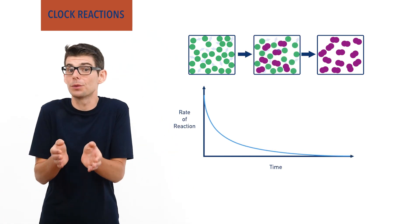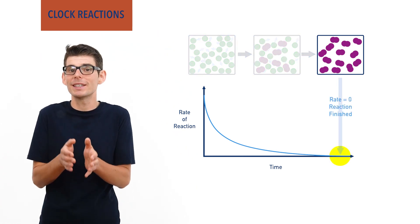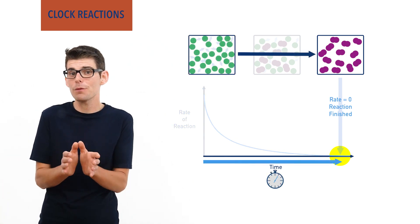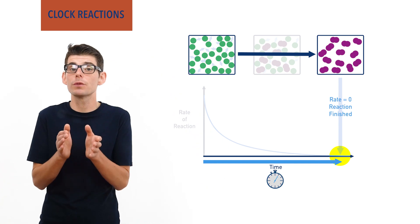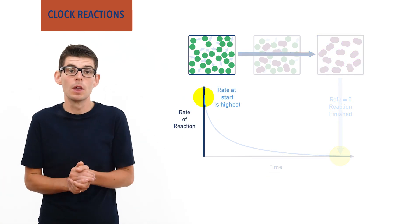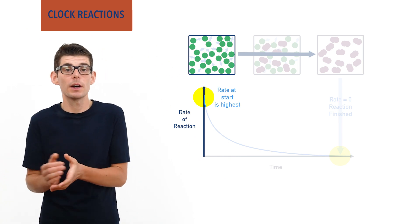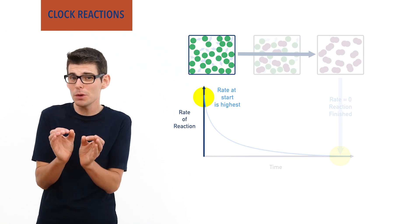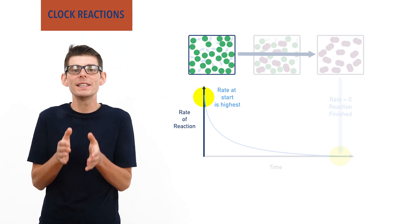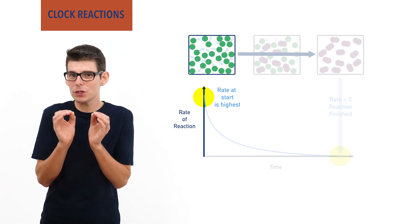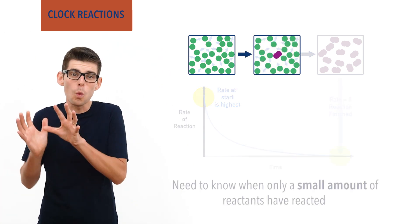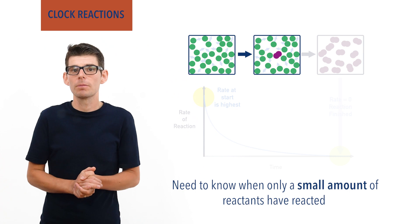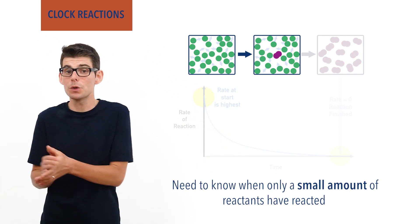We can wait until the reaction is completely finished and measure the rate as an average of how long it took for all the reactants to react. However, the average rate we calculate will be very different to the rate at the very start of the reaction, when the concentrations of reactants were at their highest. To help get around this and measure the rate as close to the start of the reaction as possible, we need a way of knowing when only a small amount of the reactants have reacted, way before their concentrations change significantly or they are all used up. Clock reactions are one way we can do this.